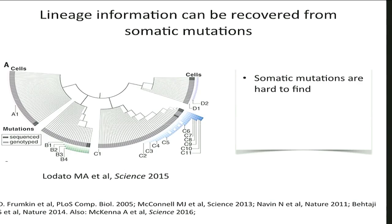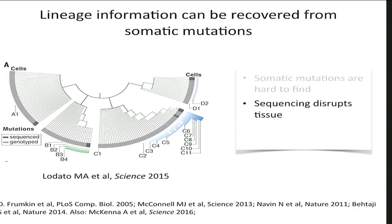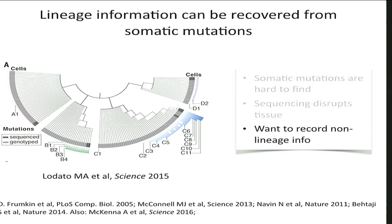But this work also has some limitations. First of all, it's hard to find these somatic mutations — they're scattered all over the genome in general. When we use sequencing to identify them, we have to disrupt the tissue, so we lose the spatial context of the cells we're looking at. And ultimately, we want to be able to record and read out information that's not just lineage, but other kinds of signals.